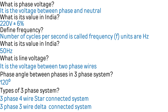What is phase voltage? It is the voltage between phase and neutral. What is its value in India? 220 volts plus or minus 6 percent. Define frequency: the number of cycles per second is called frequency and its units are Hertz, represented with f. What is its value in India? In India its value is 50 Hertz.